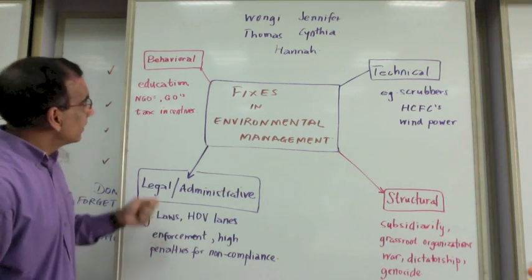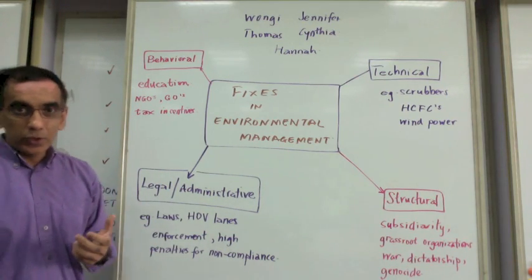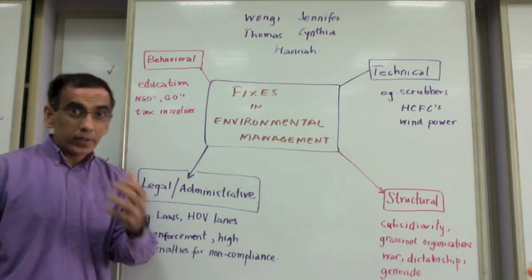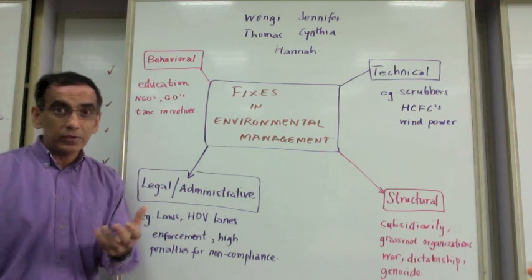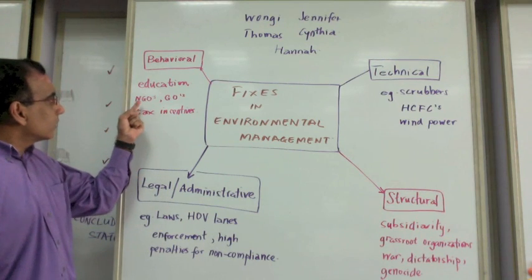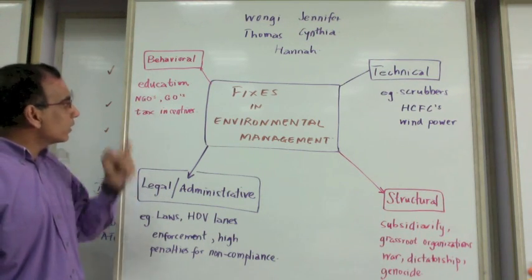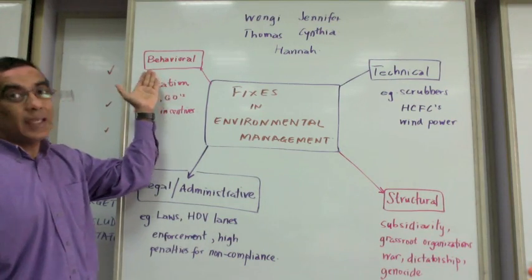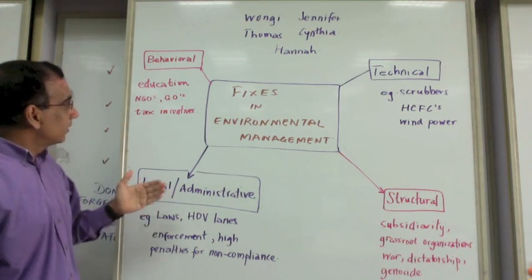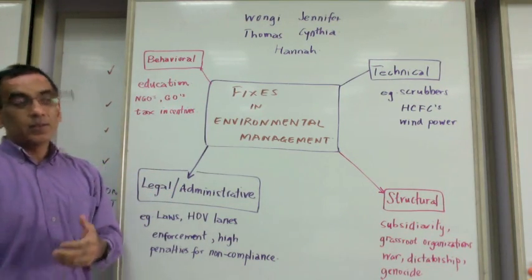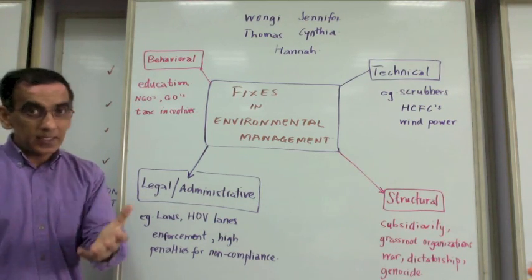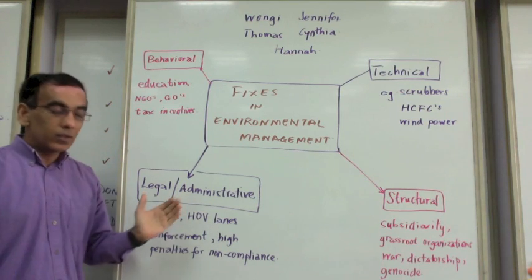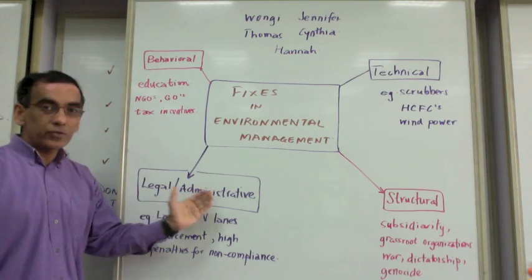Another type of fix is the behavioral fix, which would include educational campaigns to make people aware of the consequences of their actions and what they can do to fix them. Usually, governmental organizations and non-governmental organizations can have a part to play in implementing the behavioral fix. Tax incentives or disincentives, as the case might be, can also fit into this category.